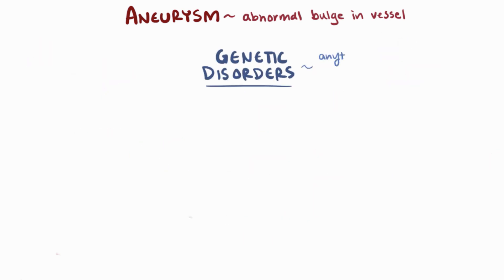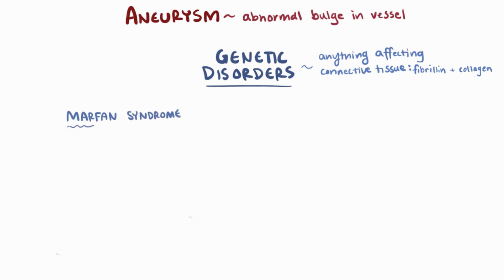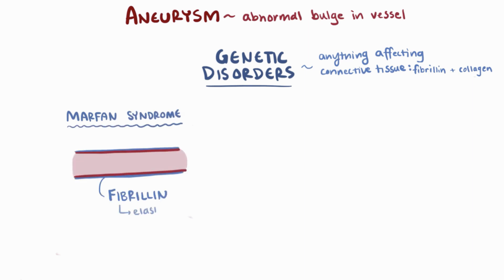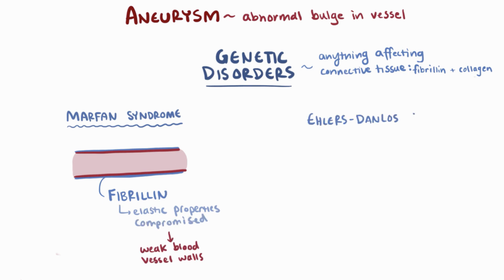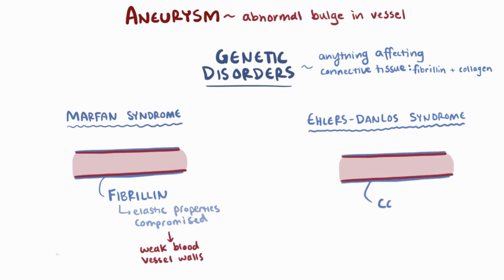Genetic disorders affecting the body's ability to properly form connective tissues like fibrillin or collagen also weaken blood vessel walls. People with Marfan syndrome have weakened vessel walls because the elastic properties of fibrillin are impaired, and people with Ehlers-Danlos syndrome are more likely to develop aneurysms because their ability to form collagen proteins is disrupted.